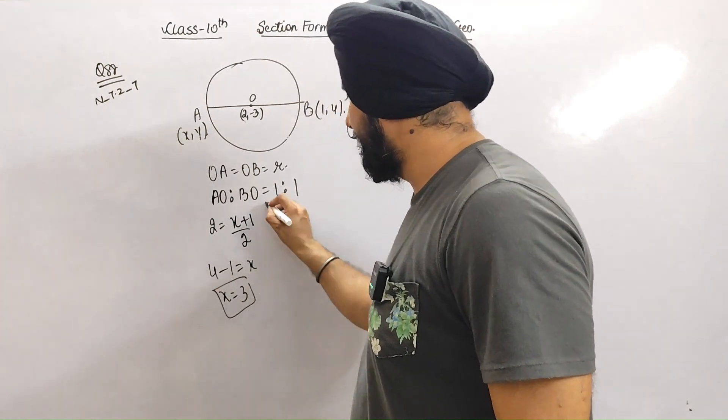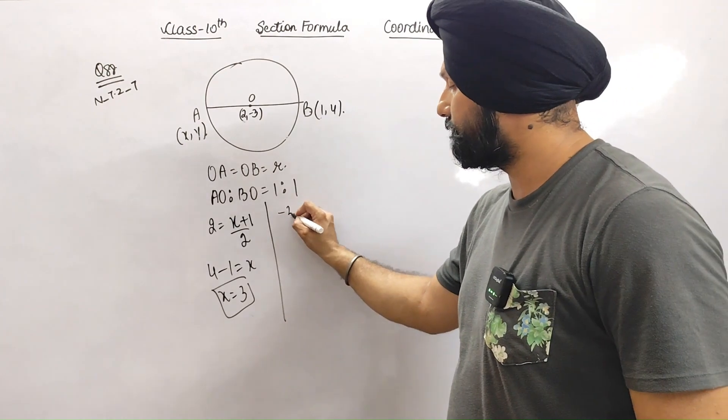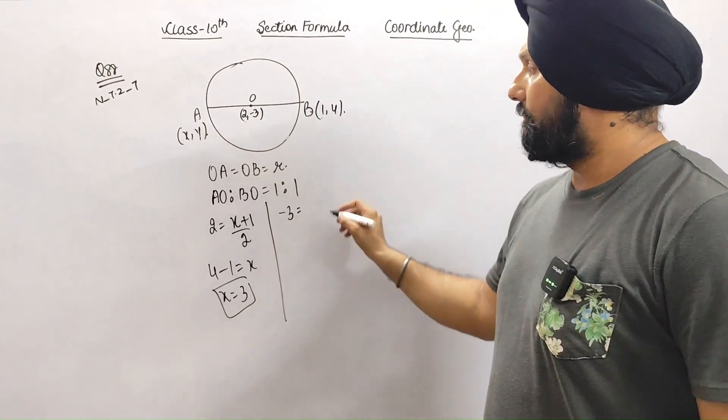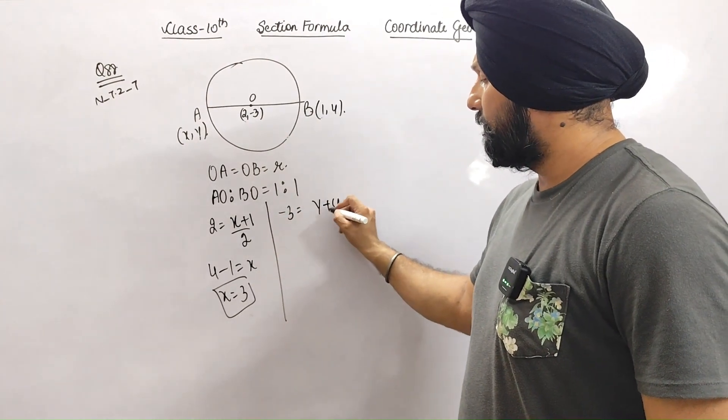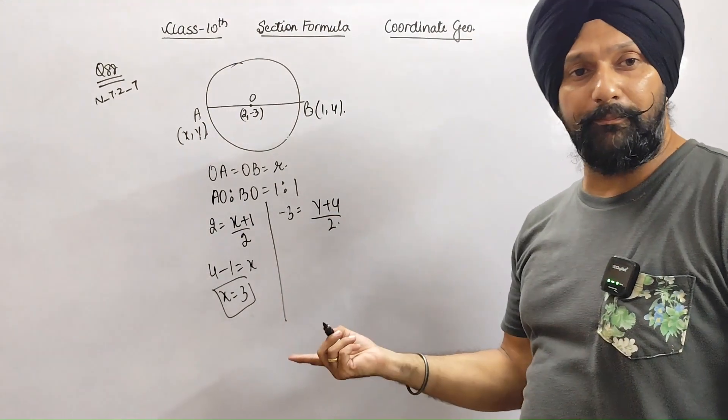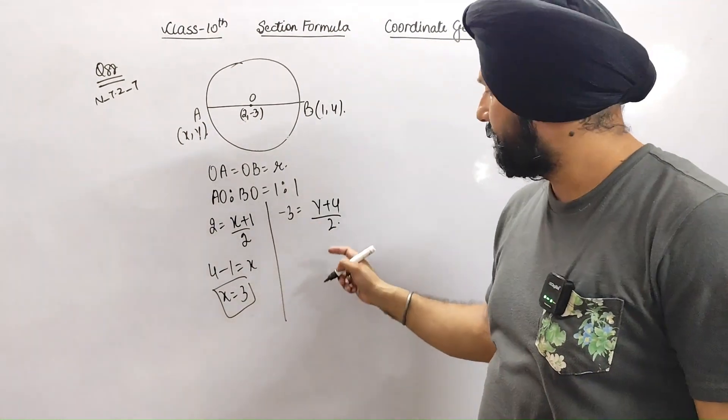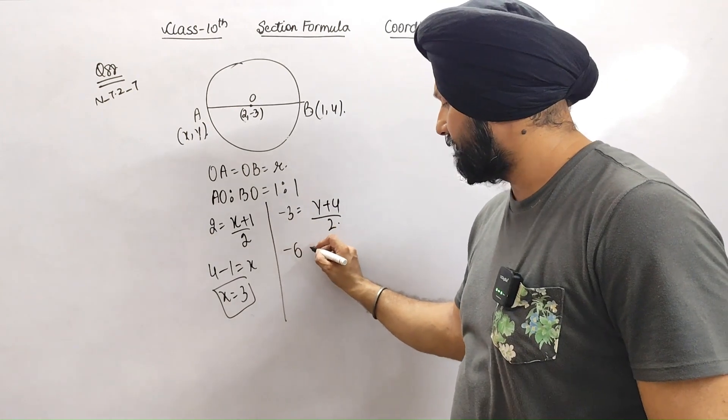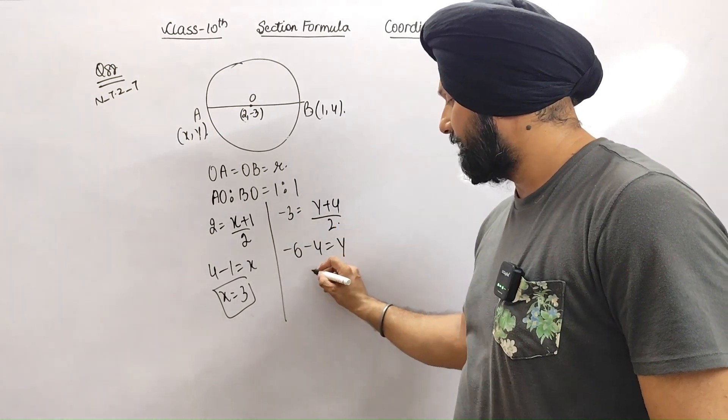Similarly, now -3 will be equal to (y + 4) divided by 2, because this is a midpoint. So -3 times 2 is -6, minus 4 equals y, so y is -10.